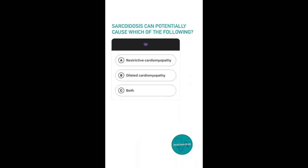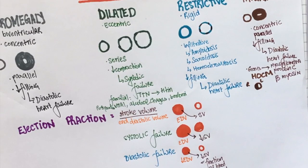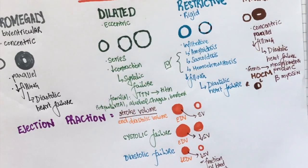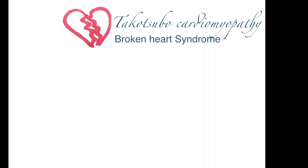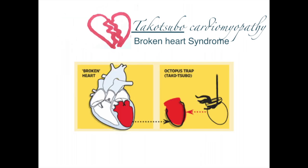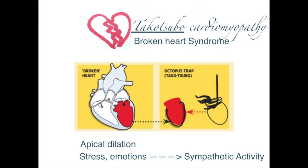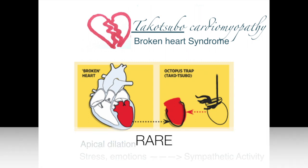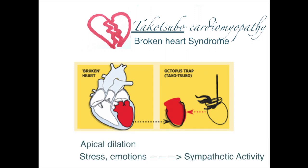Question 6. Sarcoidosis can potentially cause which of the following? Option A, restrictive cardiomyopathy; option B, dilated cardiomyopathy; option C, both. The answer is both. Sarcoidosis and hemochromatosis can cause both restrictive as well as dilated cardiomyopathies. I want to end this video by talking about broken heart syndrome, known as Takotsubo cardiomyopathy. Takotsubo apparently means octopus pot in Japanese. It gets its name because during systole there is ventricular apical dilation of the heart, making it look like an octopus pot. This is brought about by extreme stress — increased sympathetic activity due to stress leads to this condition. In rare cases it can be fatal, so it is possible to die of a broken heart — another reason why we should take mental health seriously.